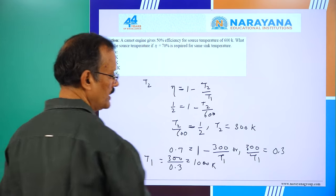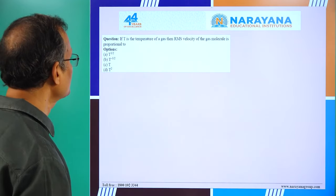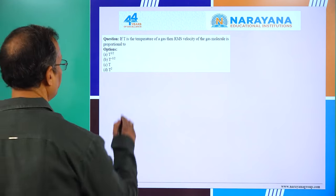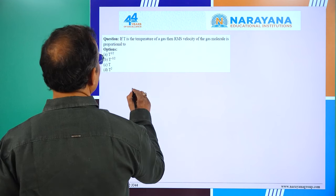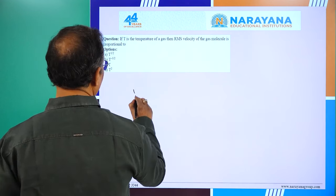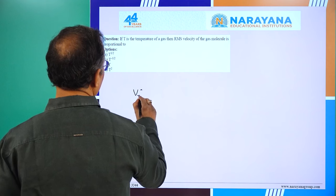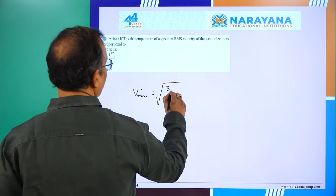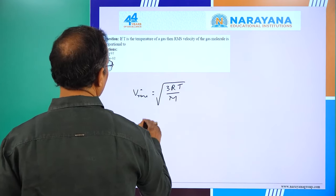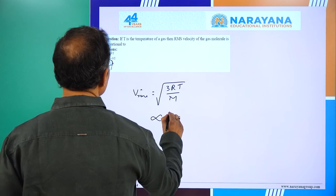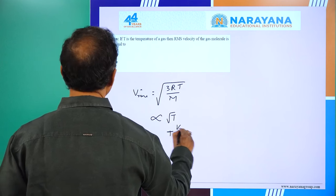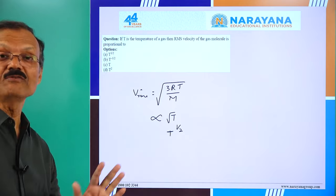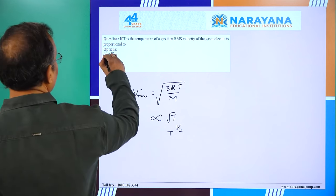If T is the temperature of a gas, the RMS velocity is given by √(3RT/M), which is directly proportional to √T (T to the power 1/2). Answer is A.